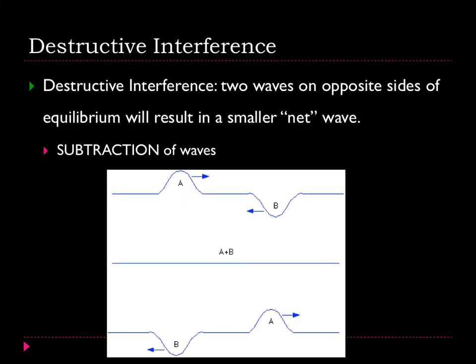The next type of interference that we talk about is destructive, and destructive usually is a thing that's not good. In this case, when two waves are on opposite sides of equilibrium, so again let's imagine that this part is equilibrium, we can see one's on top of equilibrium, one's below equilibrium. When two waves are on opposite sides, this will result in a smaller net or total wave. Essentially this ends up being subtraction of waves.